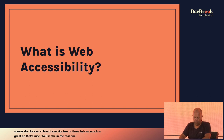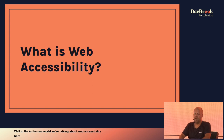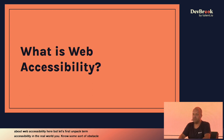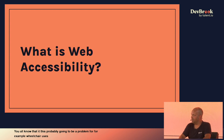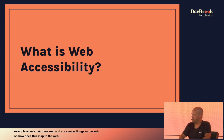In the real world, you obviously encounter obstacles — for example, stairs are probably going to be a problem for wheelchair users. There are similar things on the web. How does this map to the web? Molly, what do you say? What's web accessibility?